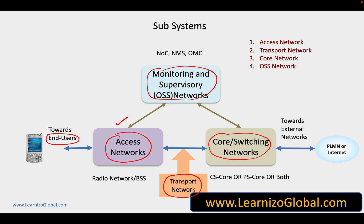Access networks are the part of the network which are providing access towards the end user. This access is typically also referred to as the air interface, where mobiles and the base stations are transmitting to each other via air using a variety of techniques. Access networks are just the entry point of the network and they don't really provide any type of services.